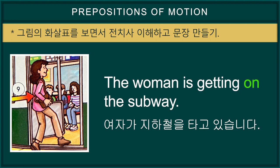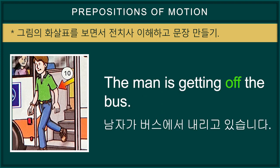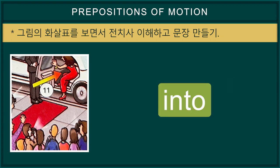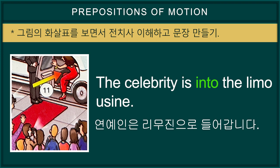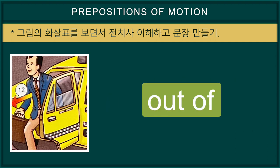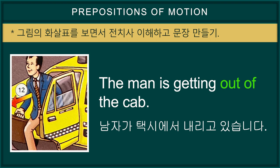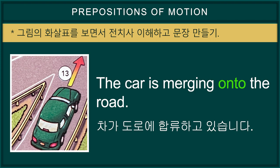On — the woman is getting on the subway. Off — the man is getting off the bus. Into — the celebrity is getting into the limousine. Out of — the man is getting out of the cab. Onto — the car is merging onto the road.